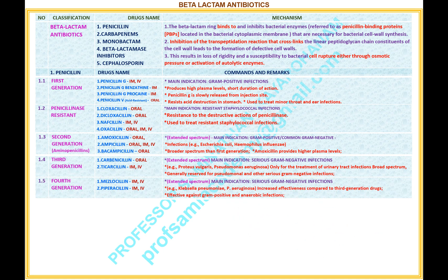Number 1.5 — Name of the classification: Penicillins, fourth generation. Drugs under this classification: 1. Mezlocillin, available route: intramuscular and intravenous. 2. Piperacillin, available route: intramuscular and intravenous. Comments and remarks — extended spectrum. Main indication: serious gram-negative infections, for example Klebsiella pneumoniae, Pseudomonas aeruginosa. Increased effectiveness compared to third generation drugs; effective against gram-positive and anaerobic infections.